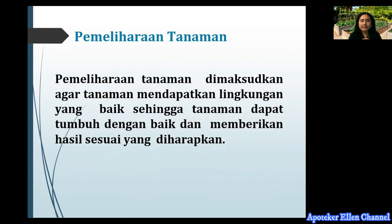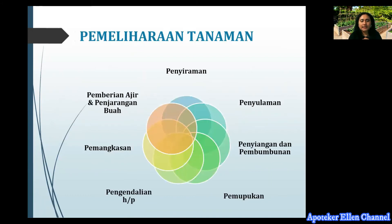Pemeliharaan tanaman dimaksudkan agar tanaman mendapatkan lingkungan yang baik sehingga tanaman dapat tumbuh dengan baik dan memberikan hasil sesuai yang diharapkan. Proses pemeliharaan tanaman yang gampang dilakukan oleh mahasiswa maupun masyarakat: yang pertama adalah penyiraman, kemudian penyulaman, ada juga penyiangan dan pembumbunan, ada juga pemupukan, pengendalian penyakit atau pemeliharaan, dan juga pemangkasan, pemberian ajir atau penopang, dan penjarangan buah.